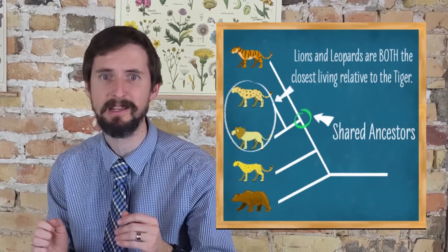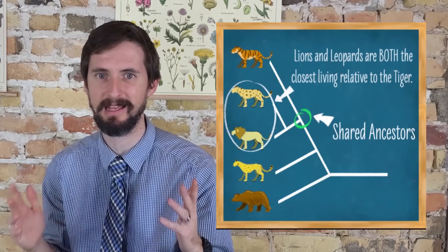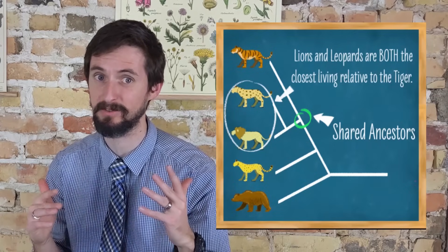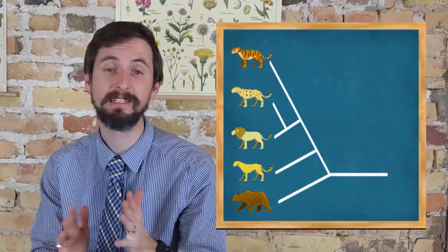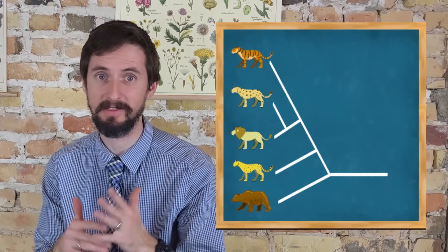Remember, when the ancestors of tigers split off from the ancestors of leopards and lions, there was no difference between the ancestors of leopards and the ancestors of lions. They were the same thing. So one of them is not more closely related to tigers than the other.